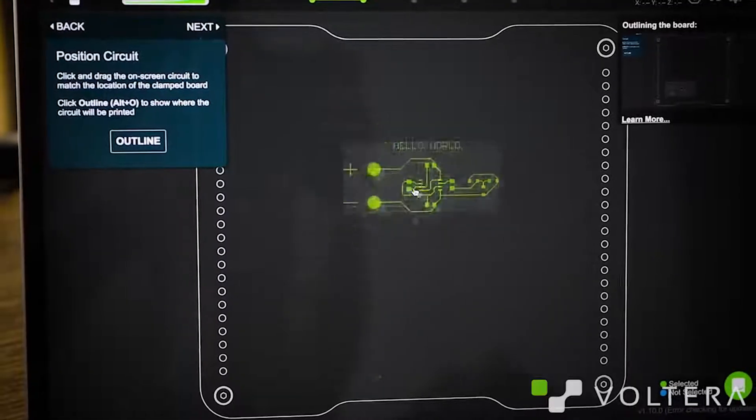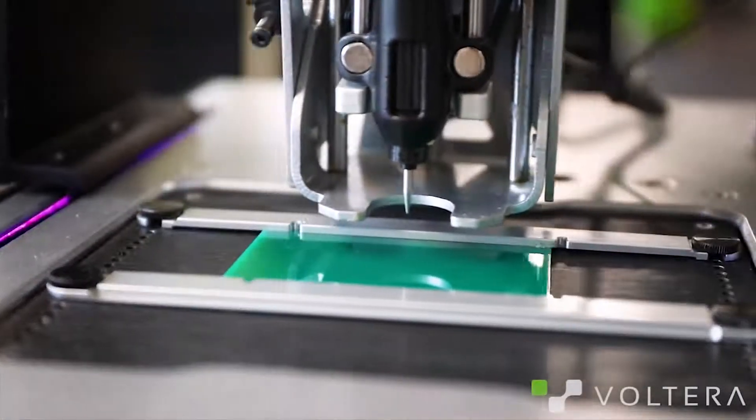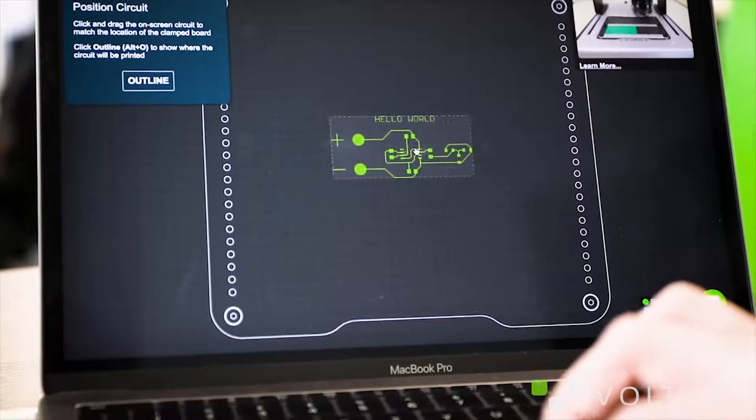So now we need to position the circuit. The probe will outline the printing area. Boom! Nailed it in one. But that's because I'm a pro. Don't feel bad if your probe misses the edge. Just reposition your circuit like this.